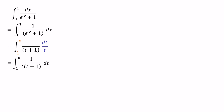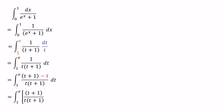Now we can write the numerator value 1 as t plus 1 minus t. To cancel out the t value, we write minus t. After that, we can divide the numerator values from the denominator values separately. Then we have t plus 1 over t times t plus 1, and minus t over t times t plus 1. We can cancel out the numerator t plus 1 with the denominator t plus 1, and similarly the numerator t with the denominator t.